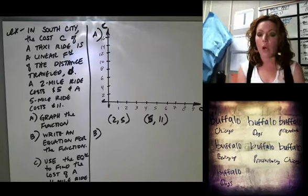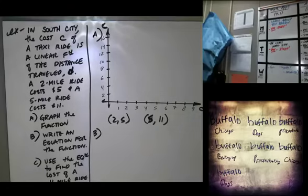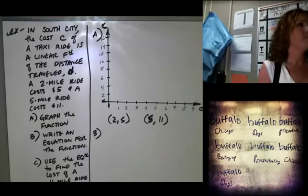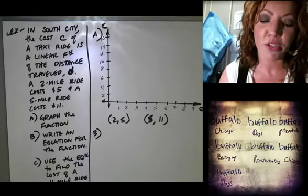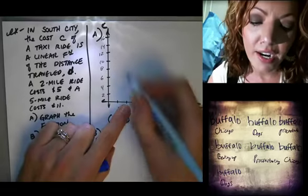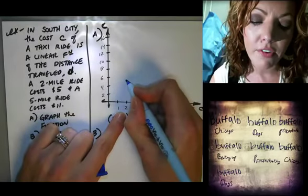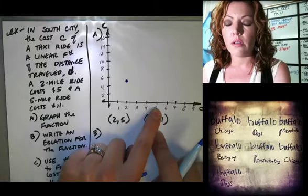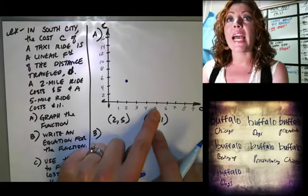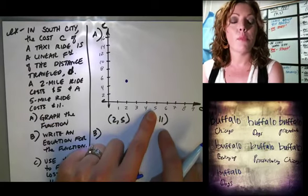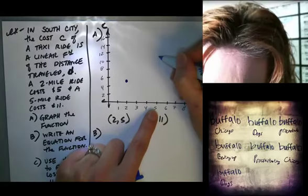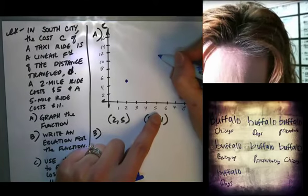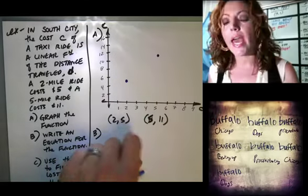We have the coordinates (2, 5) and (5, 11). For (2, 5): go over 2 and up 5. For (5, 11): go over 5 and up 11.